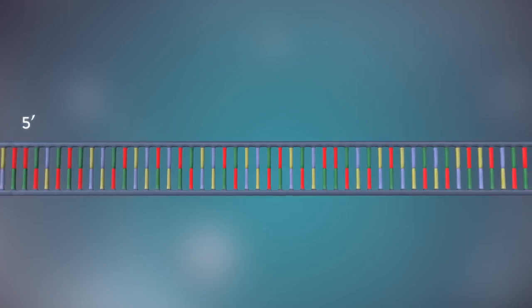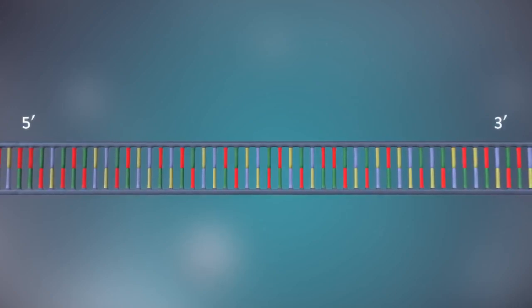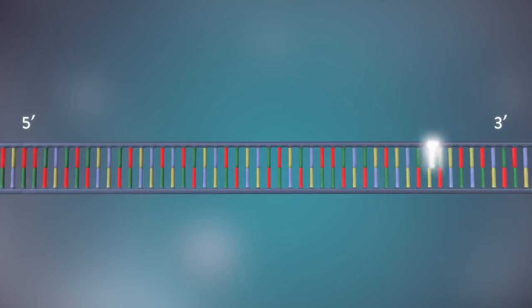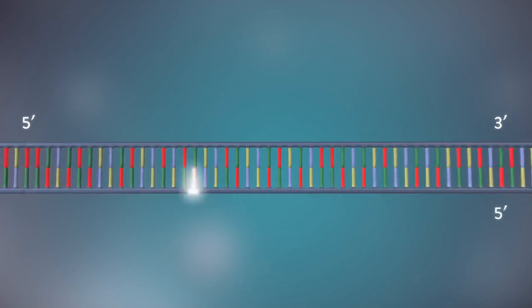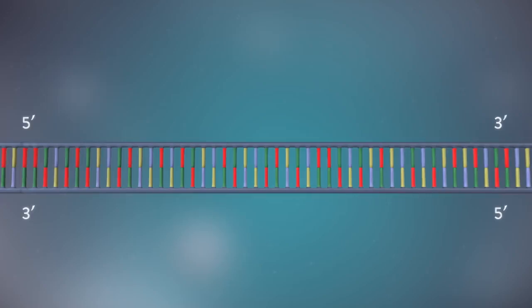Each strand has a 5' end and a 3' end. The two strands run in opposite directions. This determines how each strand of DNA is replicated.